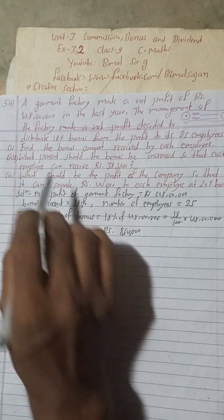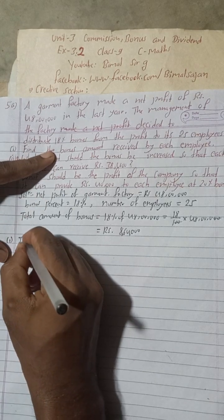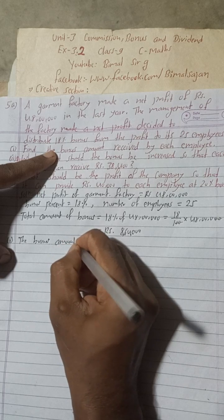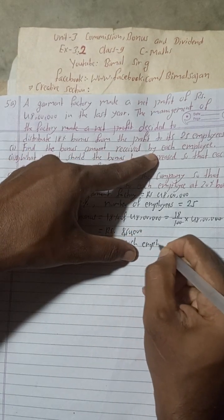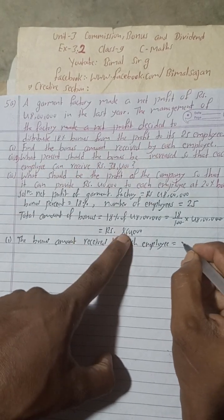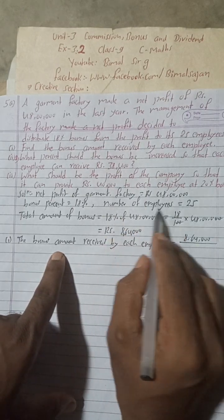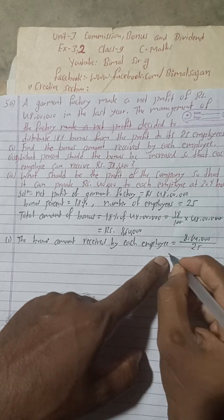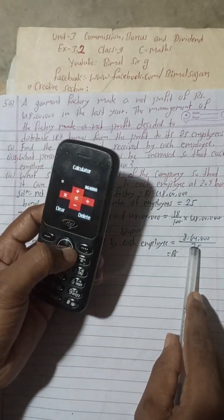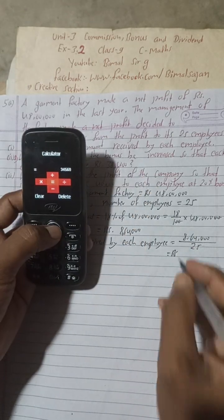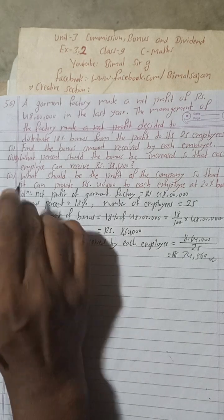Now for number 1, the bonus amount received by each employee is equal to total bonus amount divided by total number of employees. That is Rs 8,64,000 divided by 25, which equals Rs 34,560. So this is the answer for number 1.